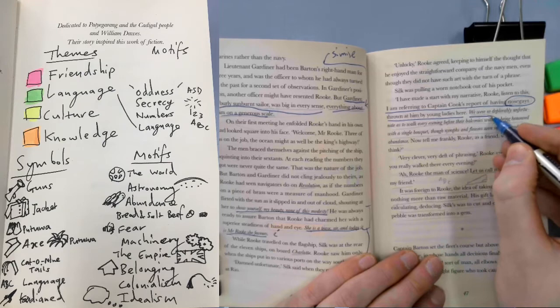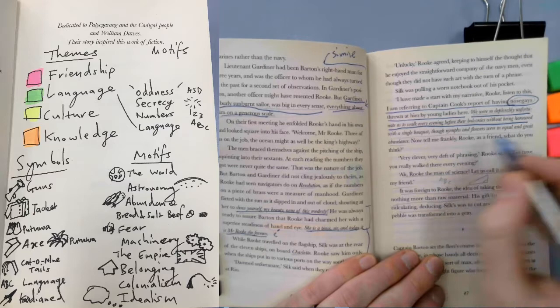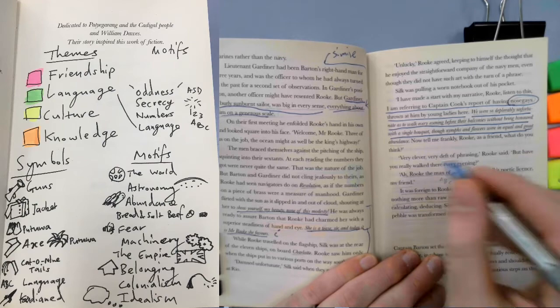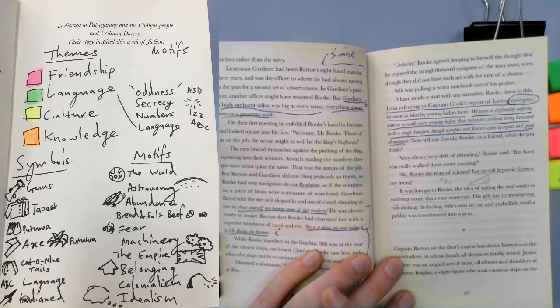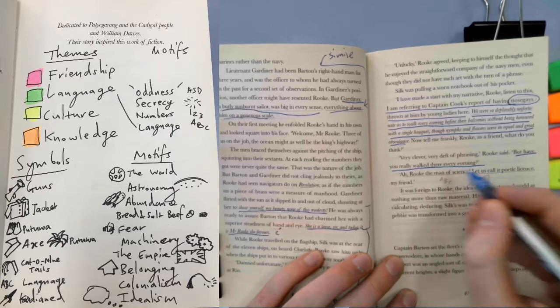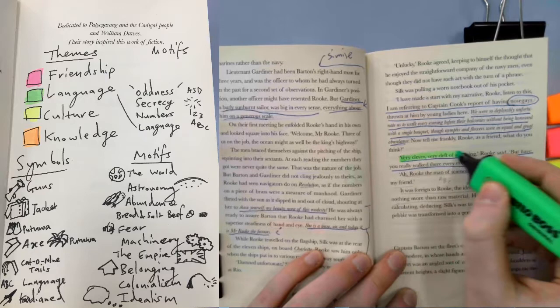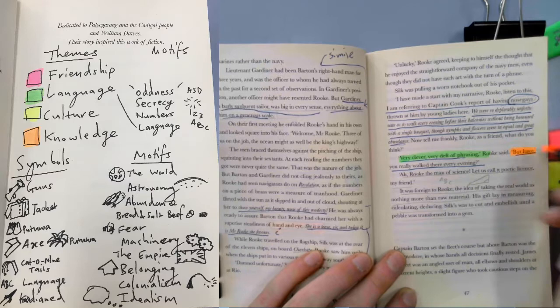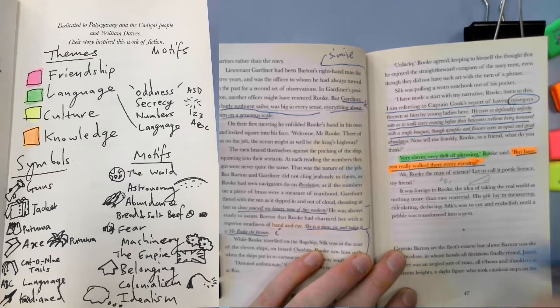Alright, so this is Rook's writing. We were so deplorably unfortunate as to walk every evening before that balconies without being wanted with a single bouquet. Though nymphs and flowers were in equal and great abundance. So obviously that's very floral writing and that's kind of the point. Now tell me frankly, Rook, as a friend, what do you think? Very clever, very deft at phrasing Rook's head. But have you ever really walked there every morning? So for Rook, he recognises a little bit that the purpose of language is to show off and be clever. But then straight away he brings it back to language always because have you ever really done that? Otherwise you shouldn't be writing about it, sort of his view.